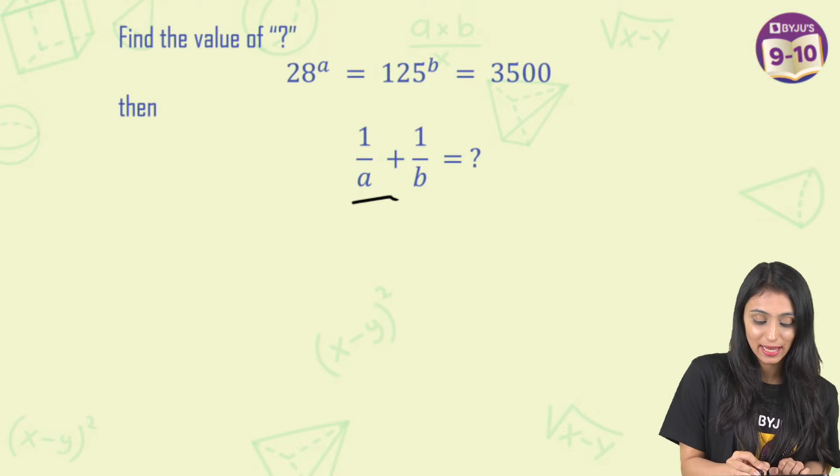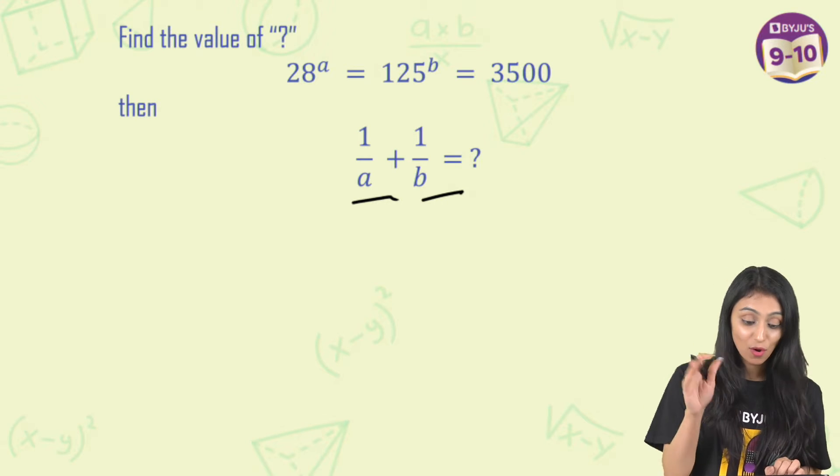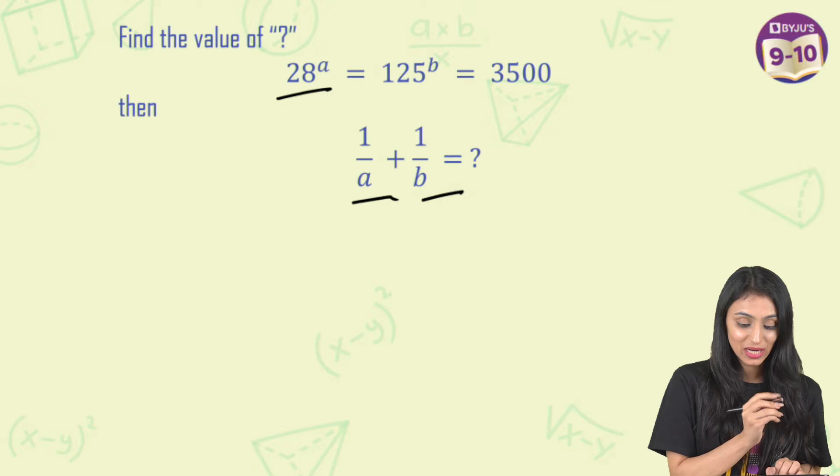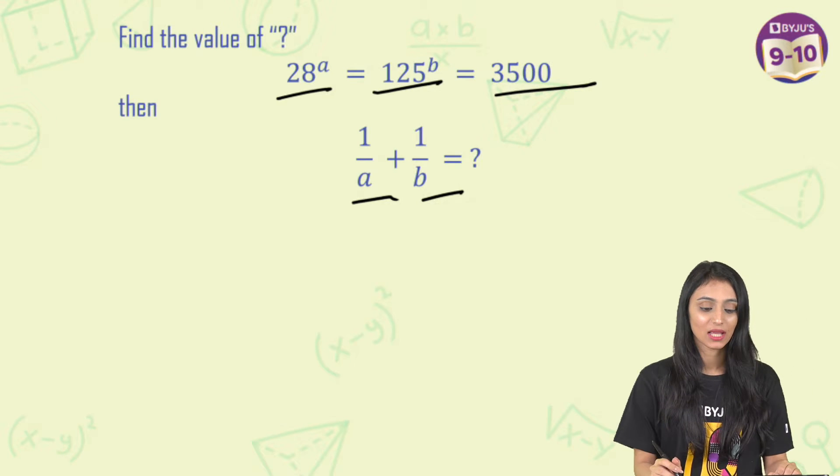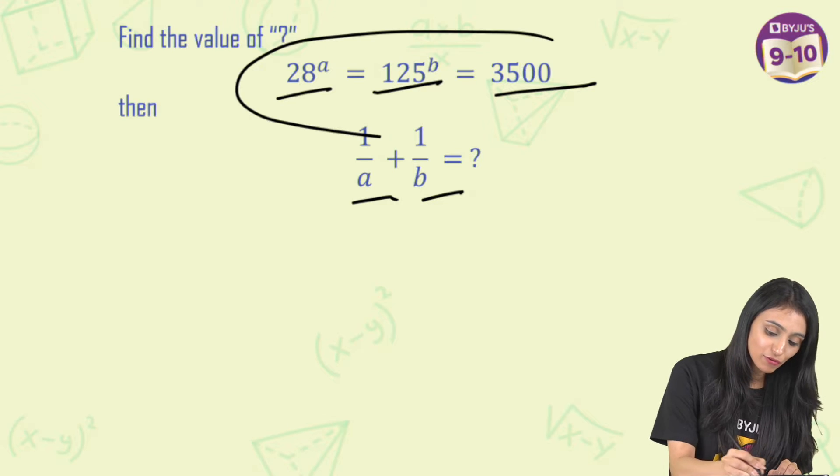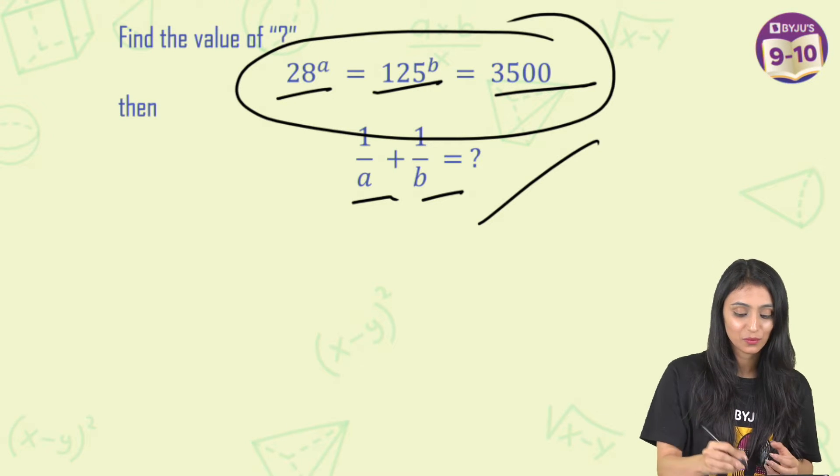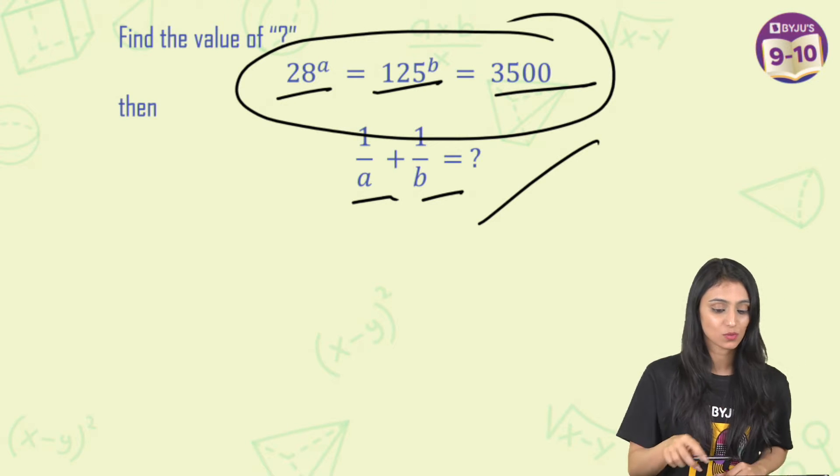Find the value of 1 by A plus 1 by B if you're already given that 28 to the power A equals 125 to the power B equals 3500. So this is given and we have to build up a relation so that we come to this step 1 by A plus 1 by B.